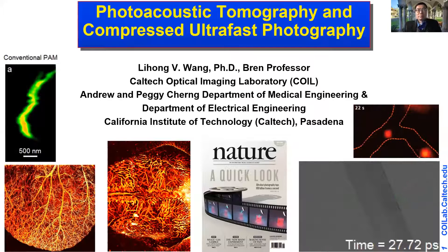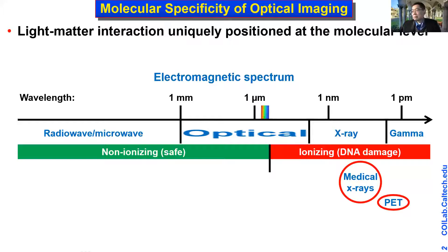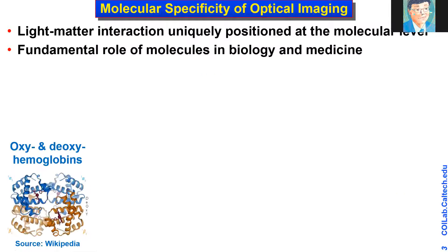Why do we work on optical imaging? Light is very special because it gives us molecular specificity. If you look at the entire EM spectrum, light occupies this tiny region. It provides non-ionizing radiation, but more importantly, light-matter interaction occurs at the molecular level, so we have direct access to molecules by using light.